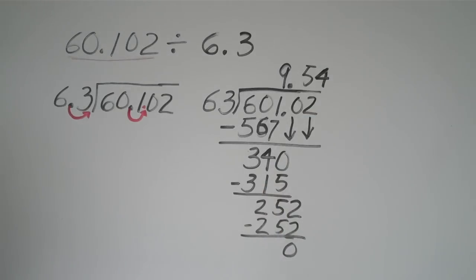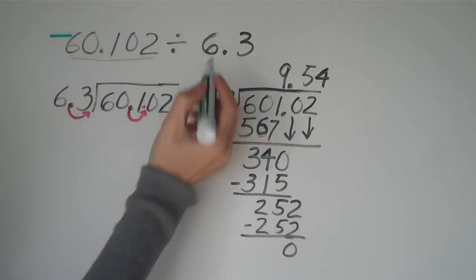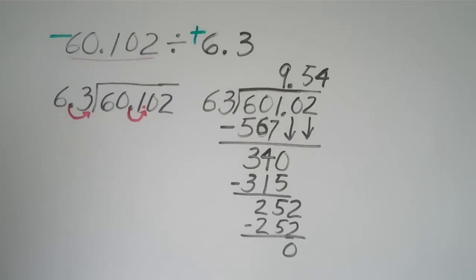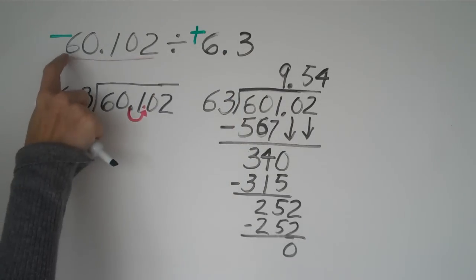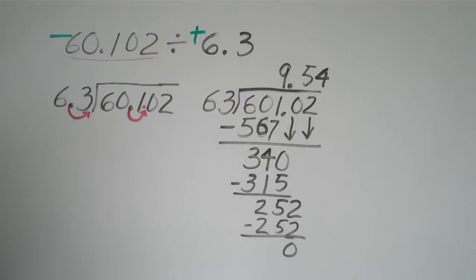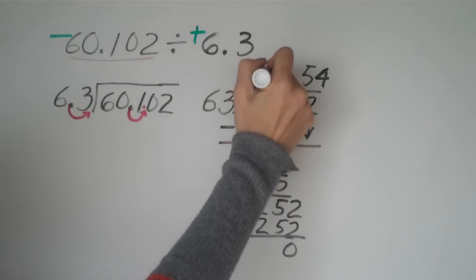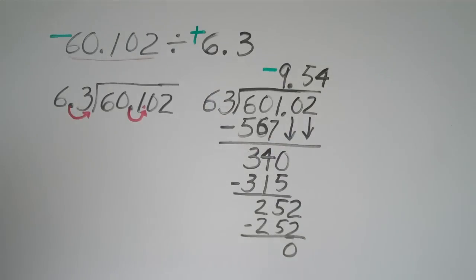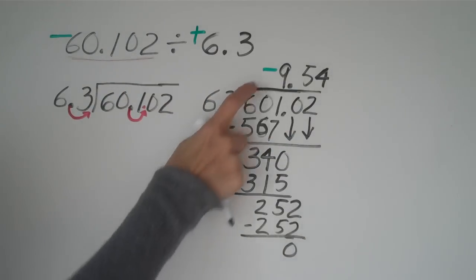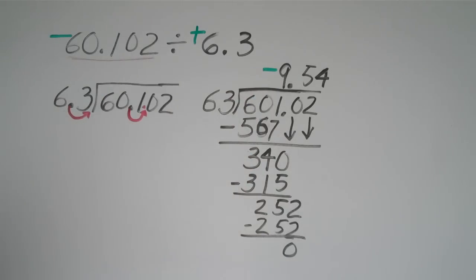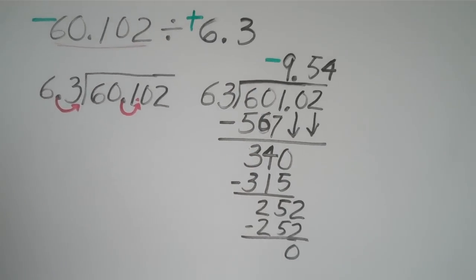Now let's pretend we had a negative divided by a positive. I should have written that in first. I apologize. So if we had a negative divided by a positive, well, then our final answer would be negative 9.54 because we had different signs. And that would lead us to have a negative answer. All right, let's do one more.